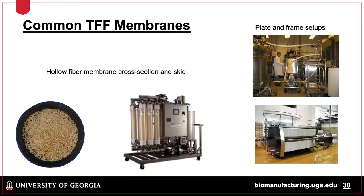Shown here are some examples of TFF systems. On the left is a hollow fiber system which consists of tubular membranes packed into a housing. Plate and frame systems, shown on the right, are membranes folded into a rectangular cartridge with channels for sample, filtrate, and retentate. Both can be expanded by increasing the number of hollow fiber systems in tandem or by increasing the number of cartridges stacked, as in the plate and frame systems.